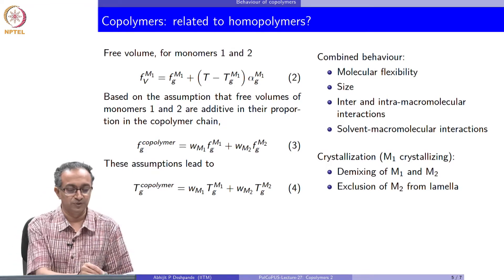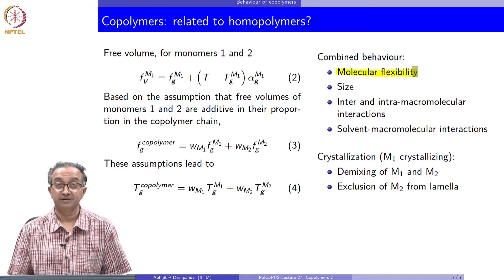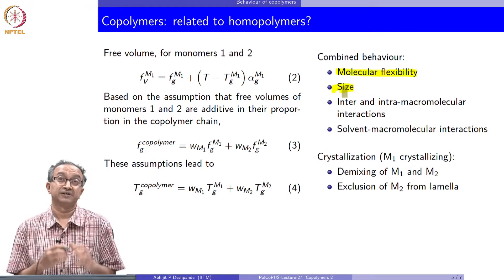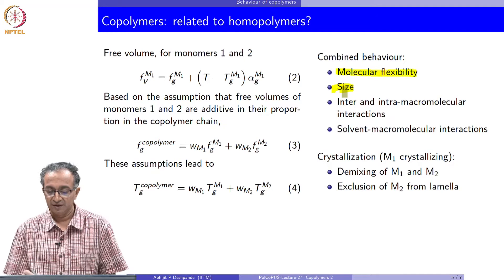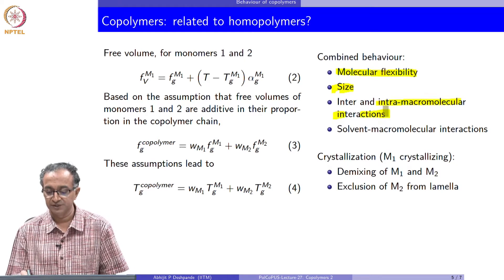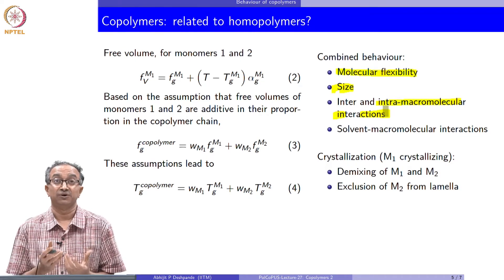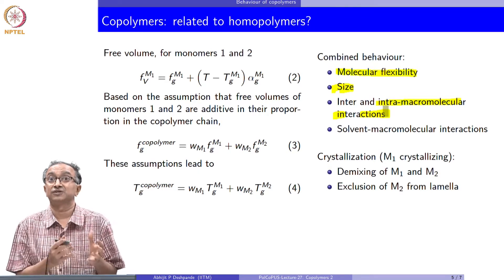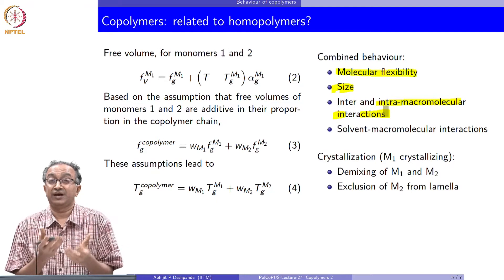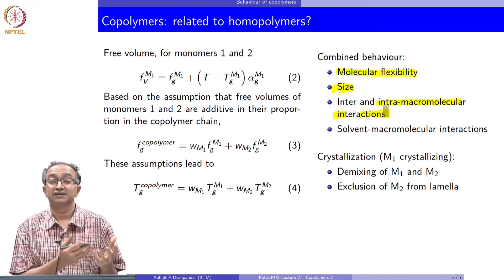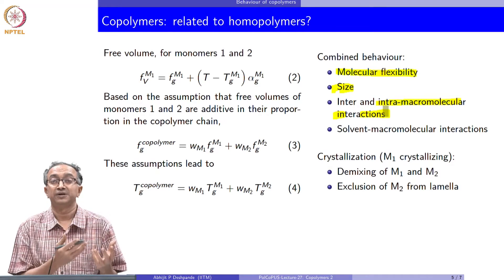Molecular flexibility can also be a combination of the flexibility of the two repeating units. Similarly, the size in terms of radius of gyration or end-to-end distance is also relevant. Key of course is also the intermolecular or intramolecular interactions — depending on hydrophobicity, hydrophilicity, hydrogen bonding potential, electrostatic interactions, or any of the interactions discussed in the 20th lecture. If there are differences in the two monomer units, these can be effectively combined to get an effective property for the copolymer.